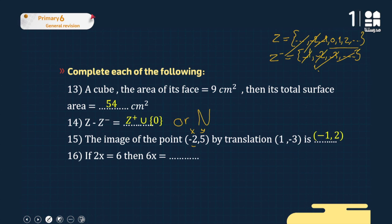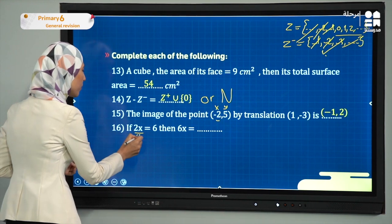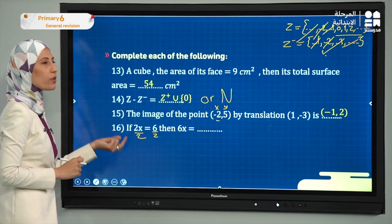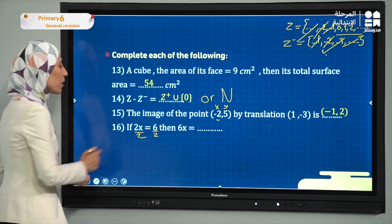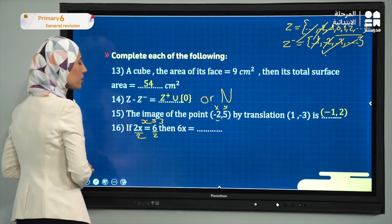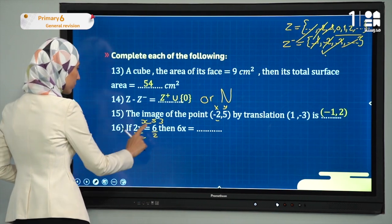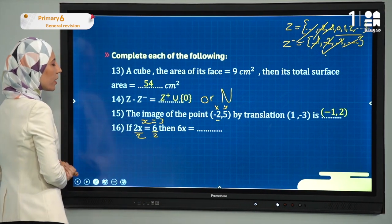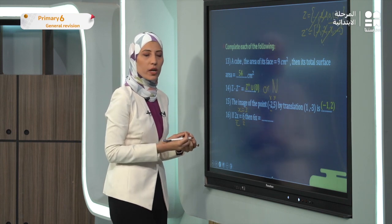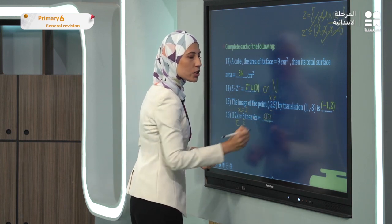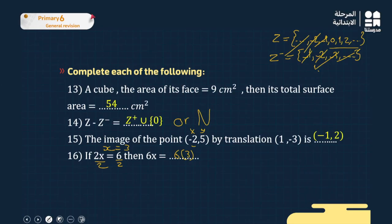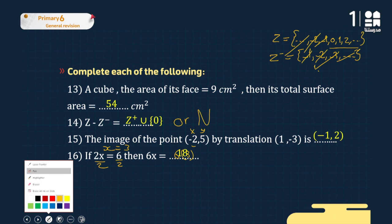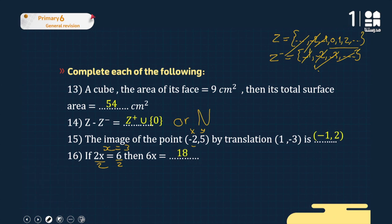Exercise sixteen: if 2x = 6, find 6x. First find x by dividing both sides by 2: x = 6 ÷ 2 = 3. Then 6x = 6 × 3 = 18. The answer is 18.